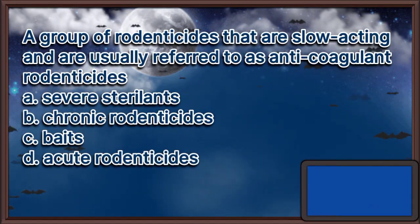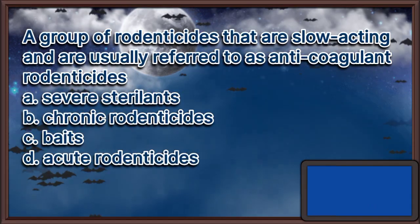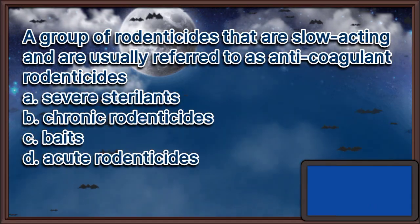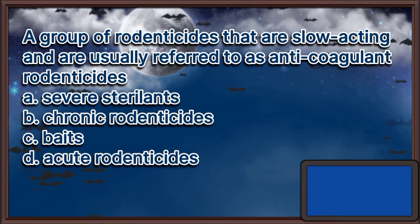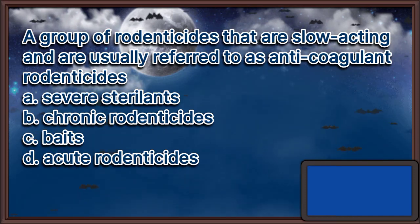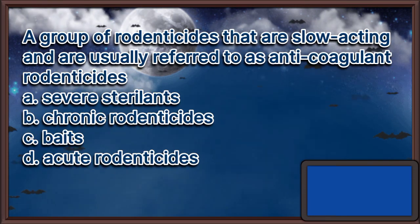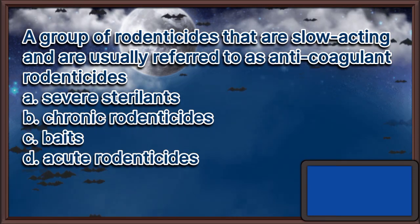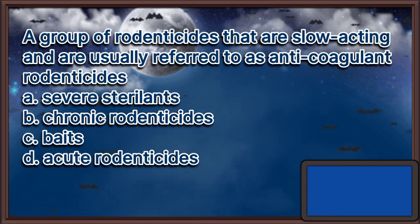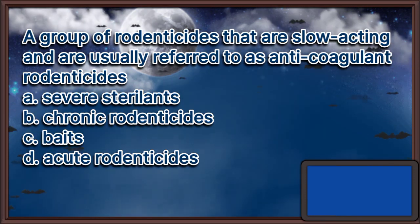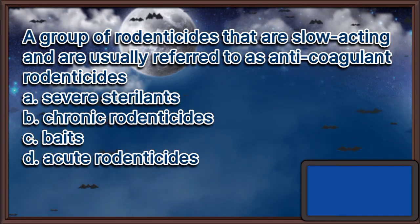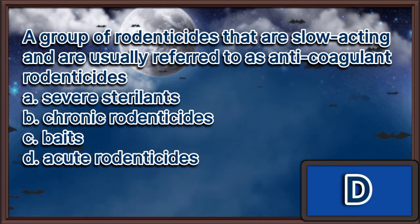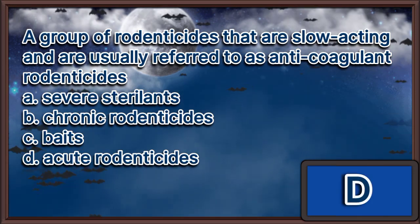A group of rodenticides that are slow-acting and are usually referred to as anticoagulant rodenticides. A. Severe sterilants. B. Chronic rodenticides. C. Baits. D. Acute rodenticides. The answer is letter D.